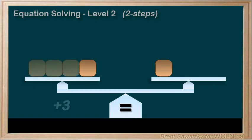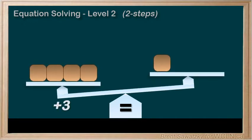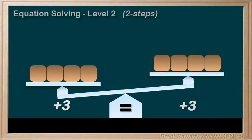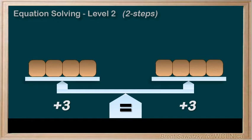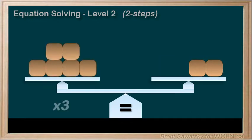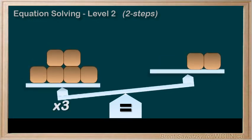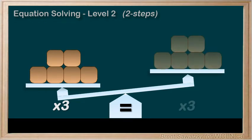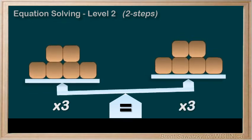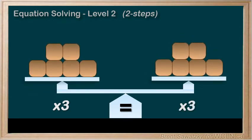If we add 3 to the left, we also have to add 3 to the right to get it back to equal. If I triple the left side, that is, times by 3, we also have to triple the right side, or times it by 3, so that we're back to balanced, or equal.